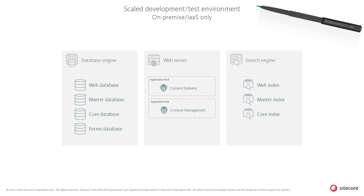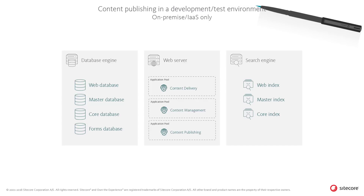For development or on-premise testing, it's possible to scale out the logical application roles across multiple application pools on the same web server. This makes it possible for a developer to host a scaled setup on a local machine for debugging or development purposes, or to set up a simple test environment within limited server resources. In a simple scaled scenario for development or test purposes, it's also possible to run the optional content publishing service as a separate process on the web server, or even as a console app for debugging.